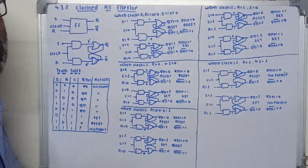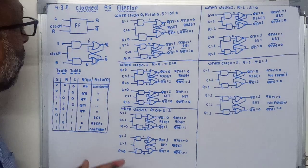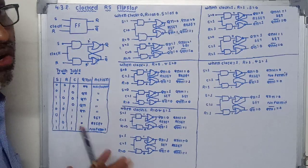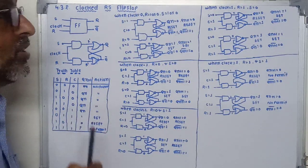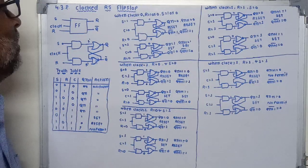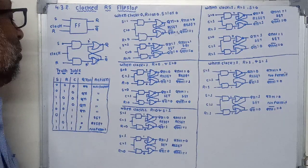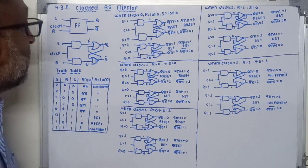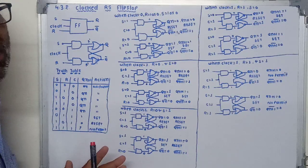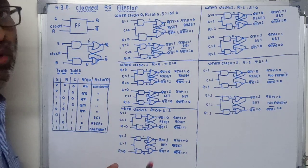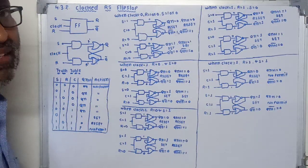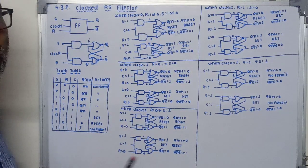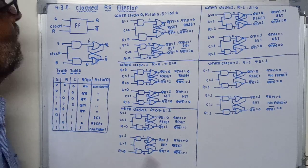We will now write the truth table for the clocked RS flip-flop. This type of flip-flop has three inputs: set, reset, and clock. Q(n+1) is the output after applying the inputs. There are two possibilities for the clock signal — zero or one — and for the other two inputs S and R, there are four possibilities: 00, 01, 10, and 11.